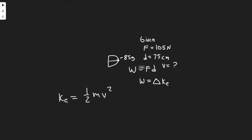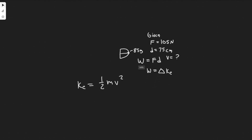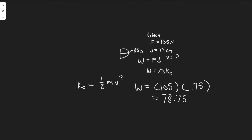The first thing we want to do is solve for work. Work equals force times distance: 105 newtons times 75 centimeters, which is 0.75 meters — we need to make sure we're in standard units. So 105 times 0.75 equals 78.75, and we measure work in joules.